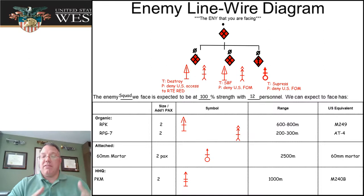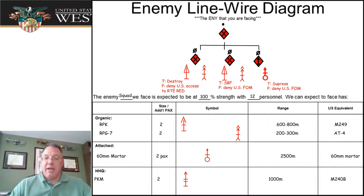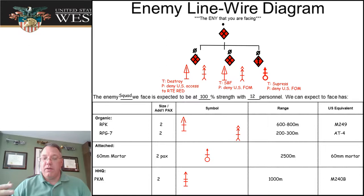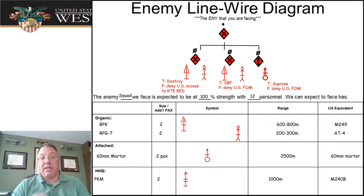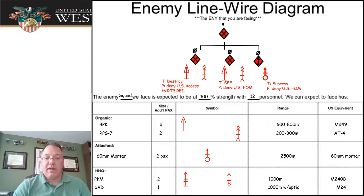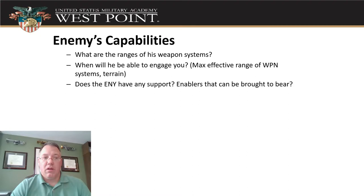Higher headquarters assets are what the enemy's higher HQ could choose to give them. We're looking at an enemy squad — we might know how the three squads in the enemy platoon are arrayed. Our partners left and right know they're facing squads, but the whole thing is a platoon, so where did they put their PKM heavy machine guns that we have to deal with? We capture the fact that higher headquarters has those assets — they could be in our sector. They've also got an SVD sniper rifle out there.